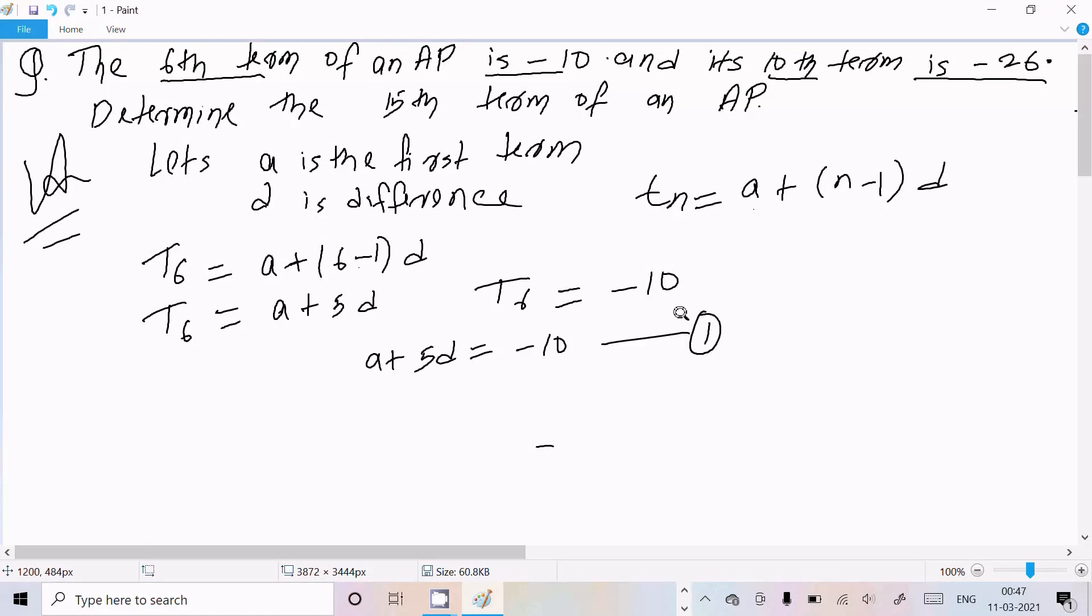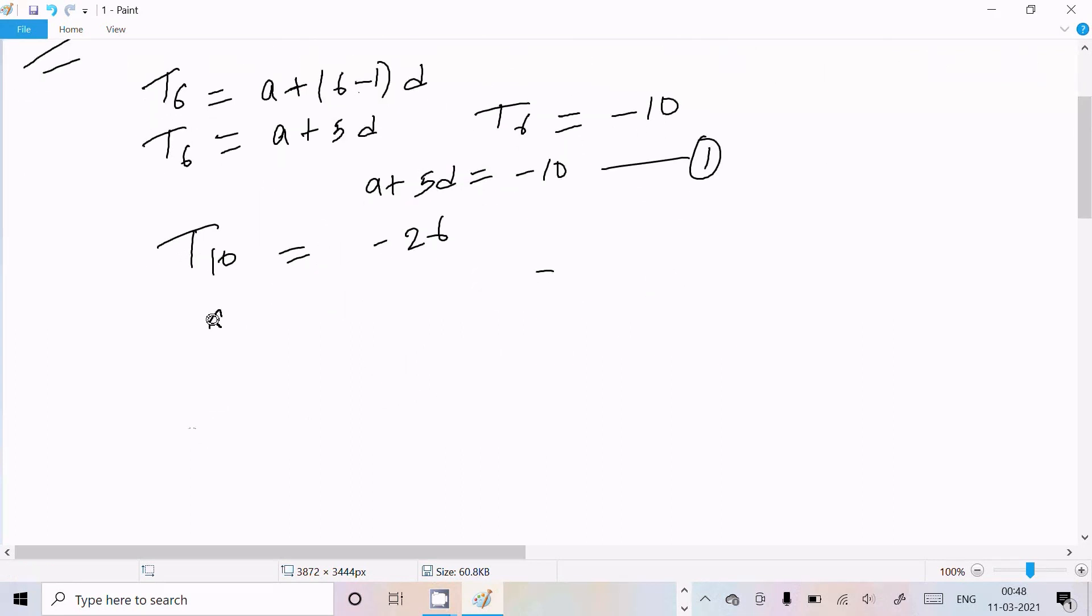Now here the next is 10th term: T₁₀ = -26. So here A + (n-1) × D = -26. So here we can write A + (10-1)D, that's A + 9D = -26. This is equation 2.